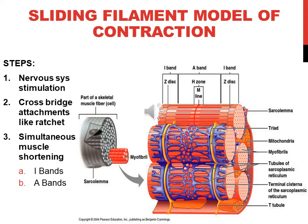Simultaneously, as those cross-bridge attachments ratchet, you get muscle shortening. The I-bands decrease in length, the distance between the Z-discs decreases as they move toward the M-line, and the A-bands get closer together. Steps two and three happen at the same time.